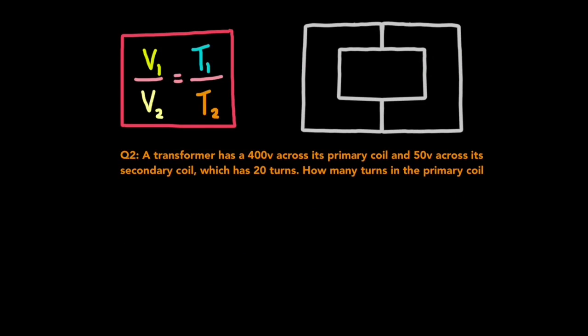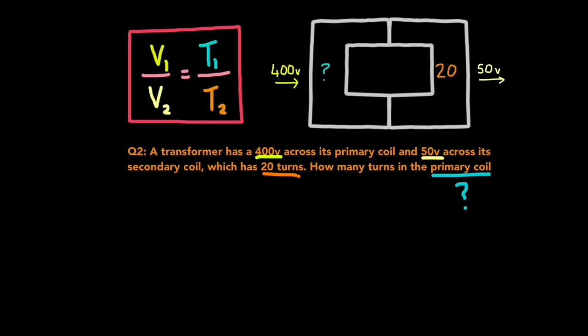Why don't you give this one a go by yourself before I give you the answer. A transformer has 400 volts across its primary coil and 50 volts across its secondary coil, which has 20 turns. How many turns in the primary coil? Once again, underline the key components and also label that diagram if it helps. So like before, we just plug in the values into this equation.